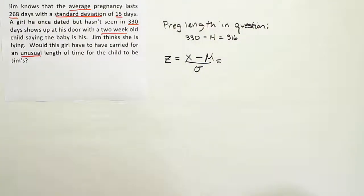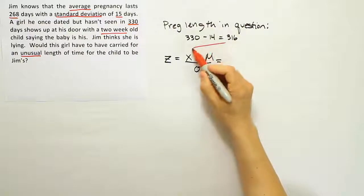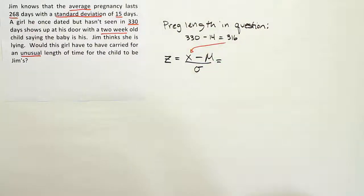So enter this value in for x and then take the numbers from the problem to get the mean and the standard deviation.